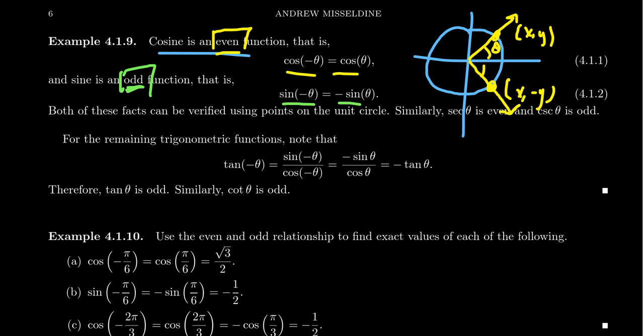These equations — cosine of negative theta equals cosine theta, and sine of negative theta equals negative sine theta — we can add to our list of trigonometric identities. We call these the symmetry identities. The symmetry identities tell us that cosine is even and sine is odd.